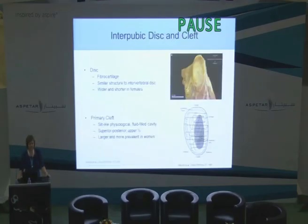This top picture shows a cross-section through the disc region at the pubis, so you can see the extent of its morphology. It's been described as similar in structure to the intervertebral disc.